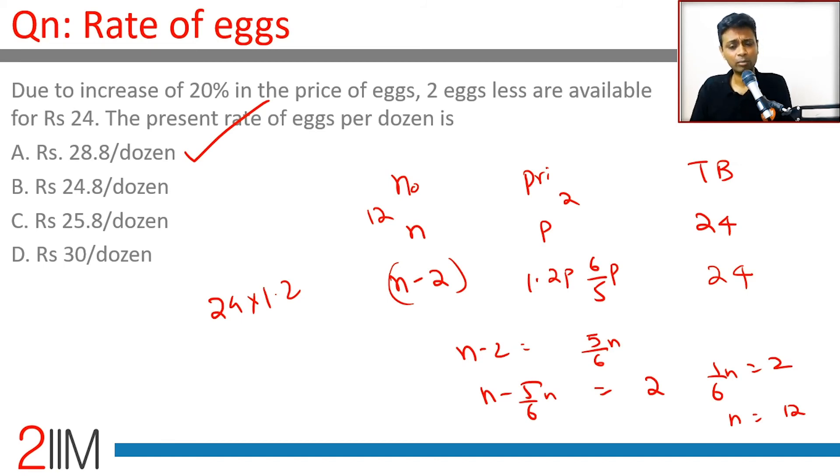The simple idea here: number of eggs into price per egg equals total budget. N into P is 24. P becomes 1.2P, N becomes N minus 2. The total budget remains unchanged at 24 bucks, and with that we can find N.